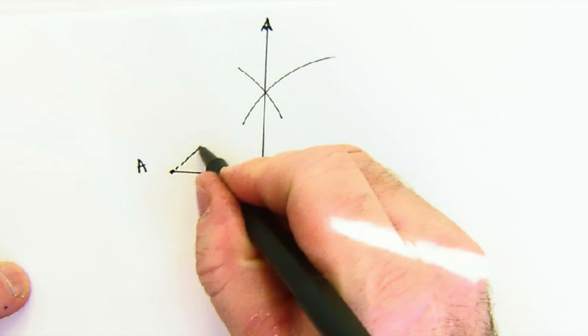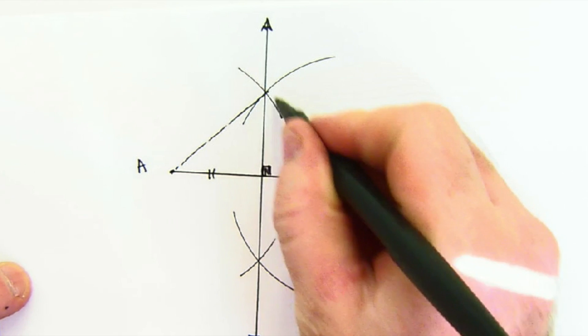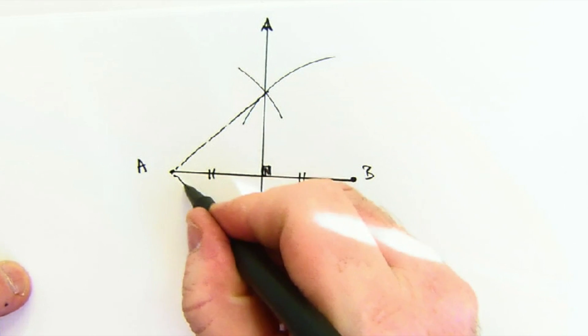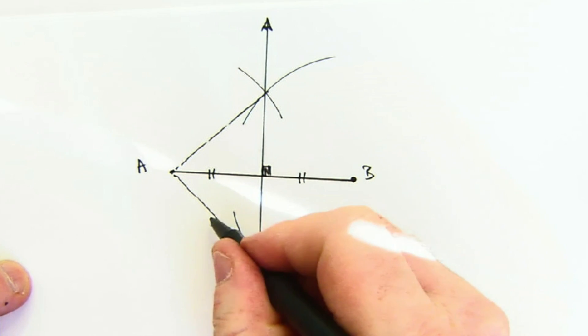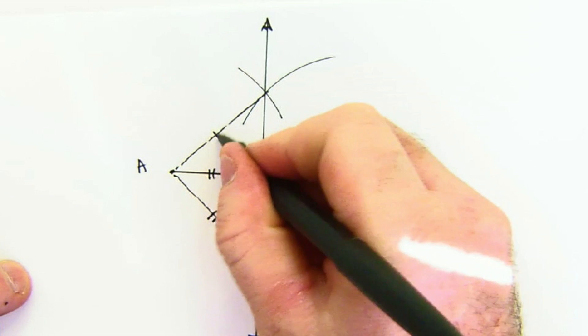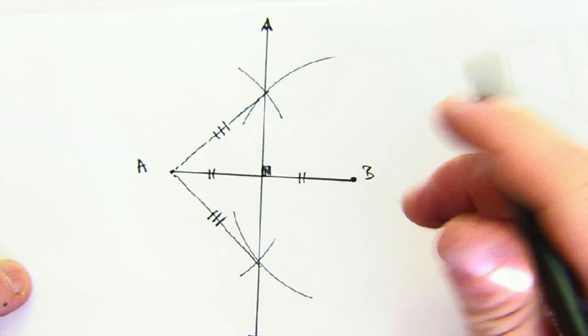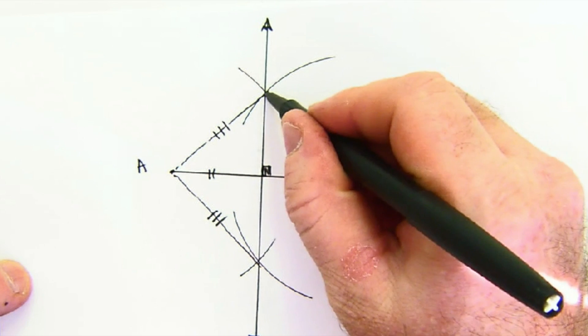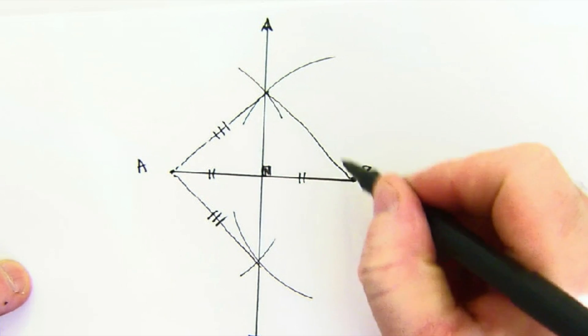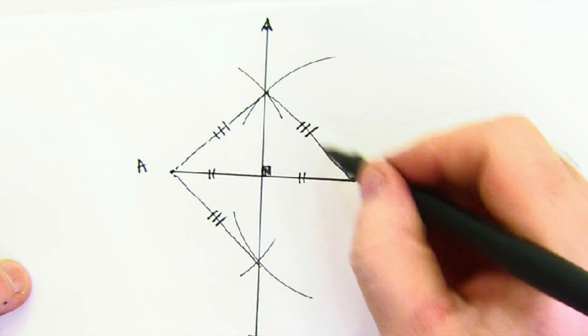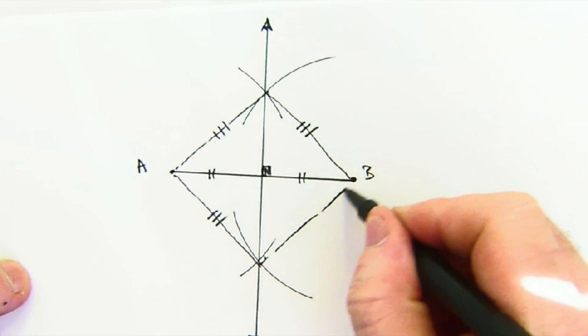We left our compass the same to create an arc above and below. That means you have two equal radii. We then went to the opposite side, B, and we created an arc that is exactly the same length. So two more equal radii.